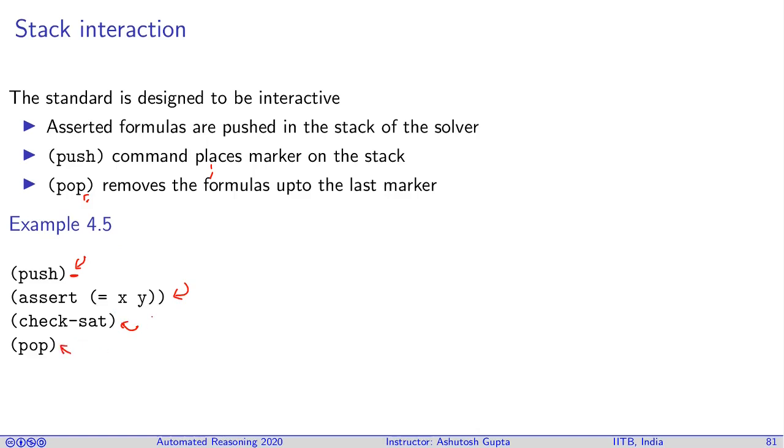So what pop does, it removes this formula and it goes back to the state where it was. You can assert another formula and solve the constraint again as if this piece of code never happened.